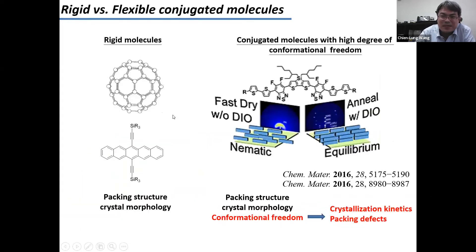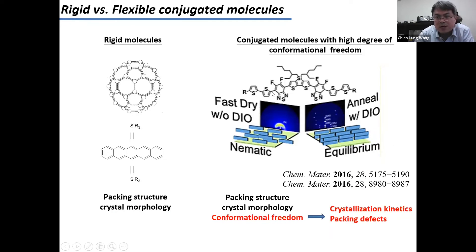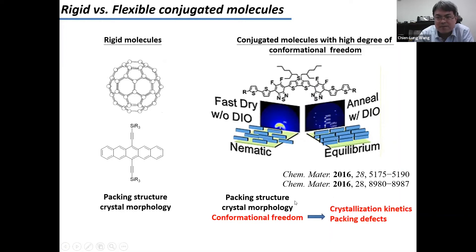After studying this, we became interested in donor-acceptor (DA) molecules, which are a very large family of materials used in OPV or organic field-effect transistors. Compared to C60 and TIPS-pentacene, DA molecules have many rotatable single bonds, which give the molecule more conformational freedom. This conformational freedom could slow down crystallization kinetics and potentially introduce more packing defects in the active thin film. So we wondered whether packing defects also affect charge mobility in DA systems.